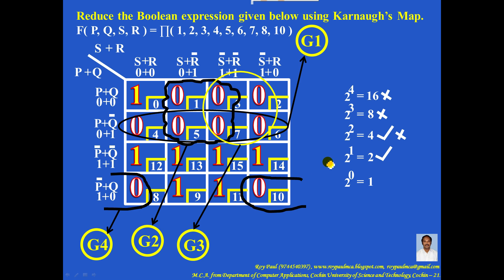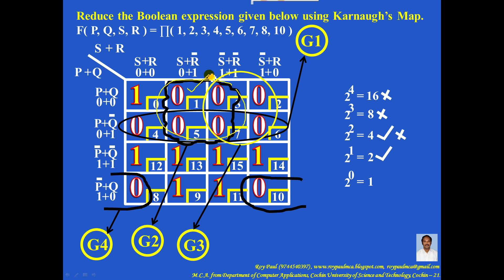Now the second-last step: check whether redundant groups are there. G1 is not redundant because at least one of its zeros is not in any other group. G2 is not redundant because at least one of its zeros is not in any other group. G3 is not redundant because at least one of its zeros is not in any other group. G4 is not redundant because its two zeros are not in any other group. So this problem does not contain any redundant group.